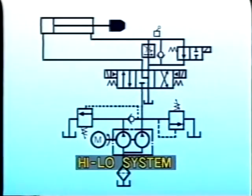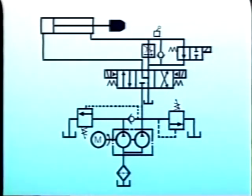This is often done with a high-low system using two pumps. In this circuit, for example, we have a 45 GPM pump and a 5 GPM pump.